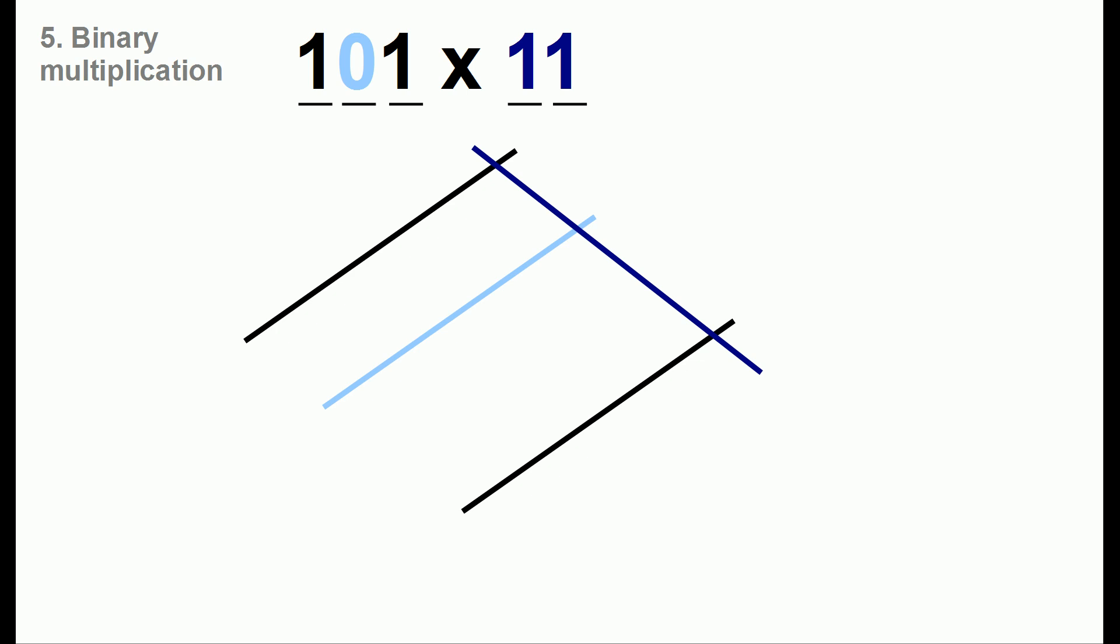In our final example we'll do binary multiplication which is numbers in base two. Let's say we want to do 101 times 11. We'll draw one line, leave some space and draw zero line, and then we'll draw one more line. And for the other number we'll make sure we start out by drawing the one on the right side and we'll leave some space to draw the other one.